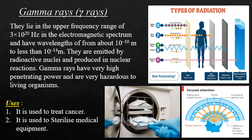Gamma rays lie in the upper frequency range of 3 × 10²⁰ Hz in the electromagnetic spectrum, with a wavelength of about 10⁻¹⁰ m to less than 10⁻¹⁴ m. They are emitted by radioactive nuclei and produced in nuclear reactions. Gamma rays have very high penetrating power and are very hazardous to living organisms. Uses of gamma rays include treatment of cancer and sterilization of medical equipment.